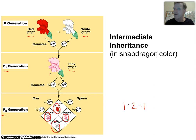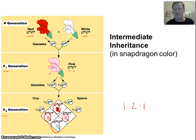The heterozygotes here are pink. So we get two pink, one white, and one red — a one-to-two-to-one ratio in the F2 generation when we cross the heterozygotes. Mendel's rule of segregation is still applying: these alleles are still segregating and recombining — they're not just blending to form all pink offspring. But the rule of dominance doesn't apply. We call this intermediate inheritance, when two traits blend together in the heterozygotes.